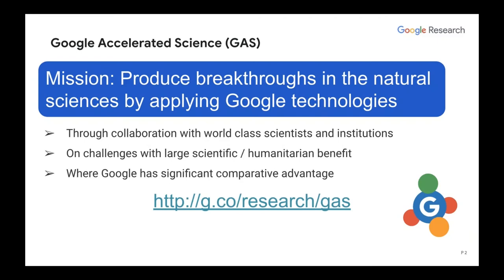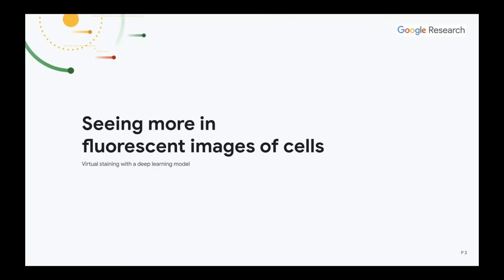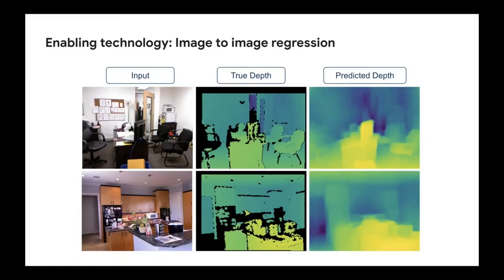If you're interested in the types of things we've done, please check out our website where you can see references to everything I'm going to talk about today as well as a whole bunch of other fun stuff. My goal today is to go through particular examples of how we've used machine learning to really perceive the world — to see or hear things that would otherwise be difficult to do, especially at the scales we want. The first example is what we've called seeing more, using a technique from machine learning called image-to-image regression.